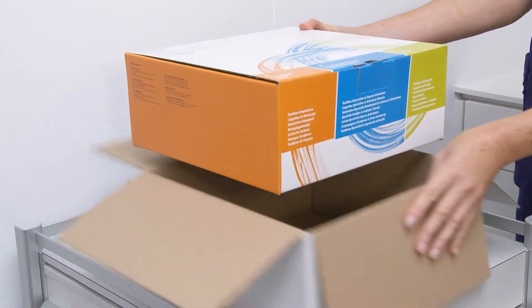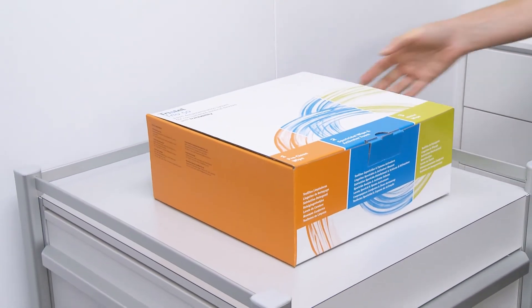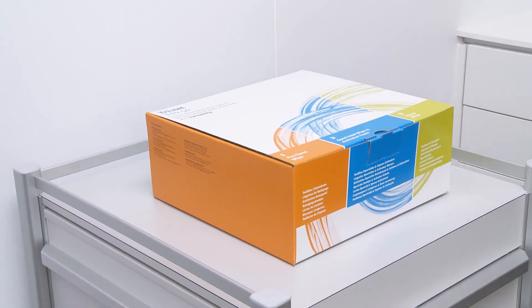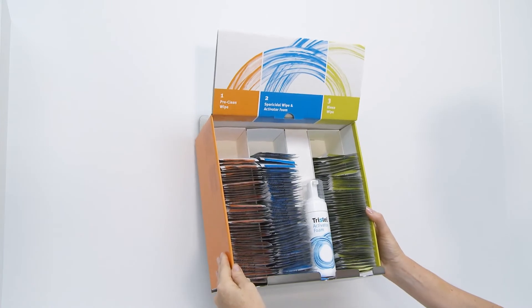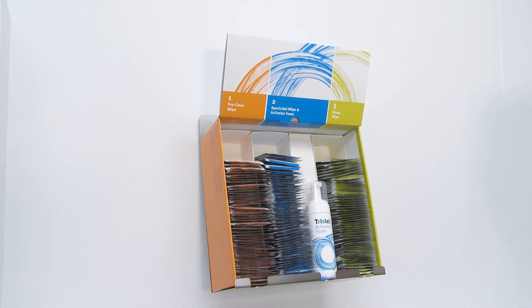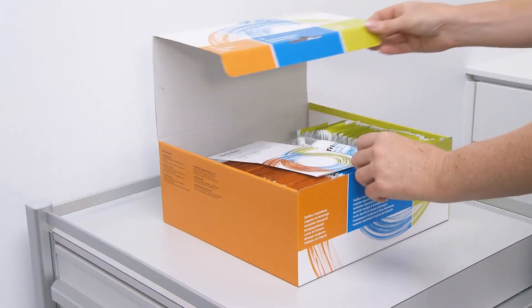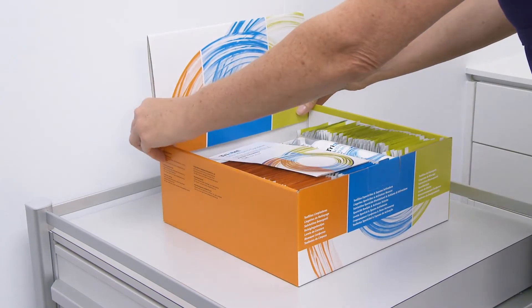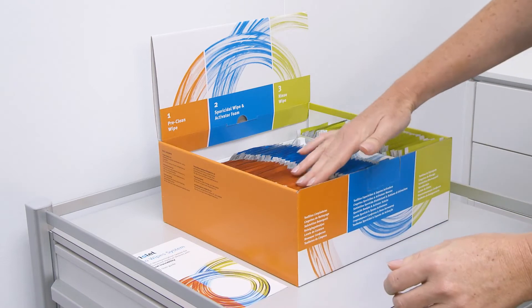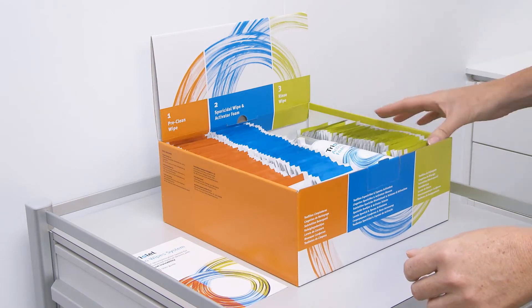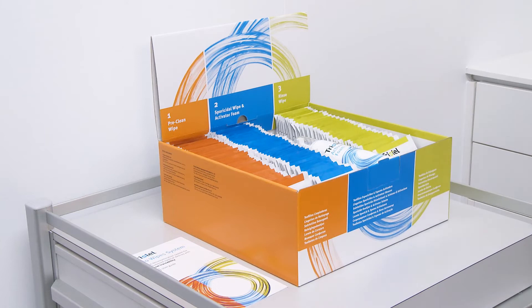When you receive your Tristel Trio Wipe System, remove it from its transport carton and place it on a clean and dry benchtop area. Alternatively, the box can be wall-mounted. Inside the product box, you will find a user guide, 50 Tristel Pre-Clean Wipes, 50 Tristel Sporicidal Wipes and 50 Tristel Rinse Wipes and one 100ml Activator Foam Bottle.